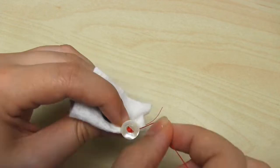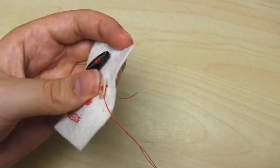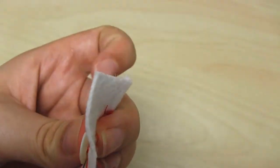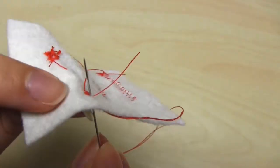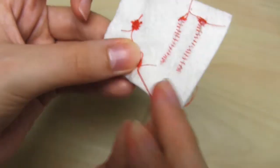Before wrapping the thread several times around the button. Then the needle goes down to the back of the fabric again, and you secure the end of the thread as we did before.